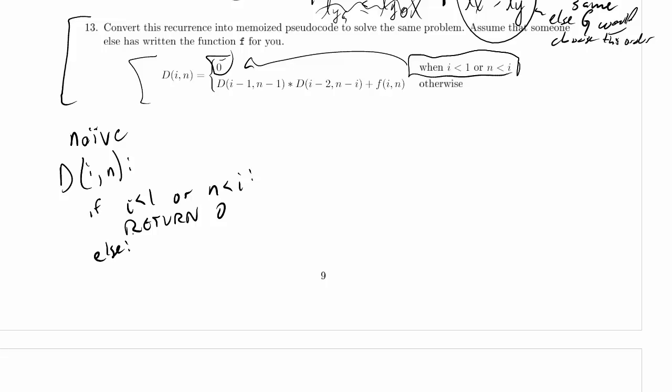Otherwise, I just want to return this quantity. Return d of i minus 1, n minus 1, times d of i minus 2, n minus i, plus f of i comma n. That's it. That's the naive version. I'm going to move this down below, because I think I'm going to write my memoized version off to the right here.